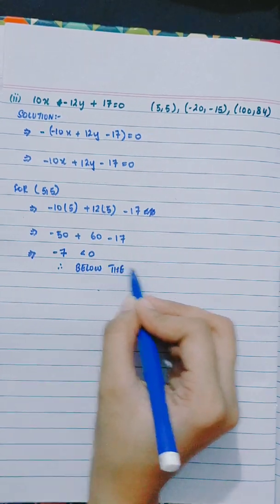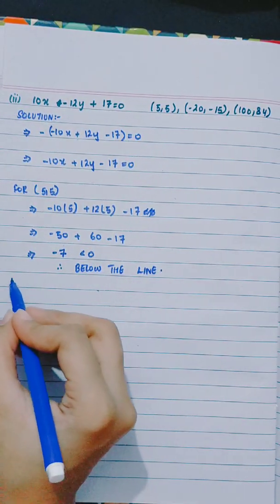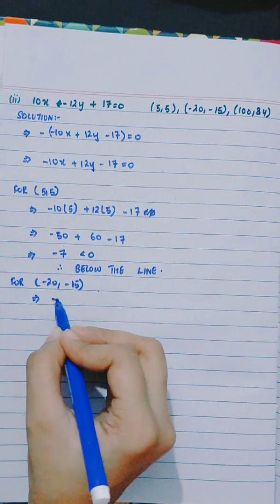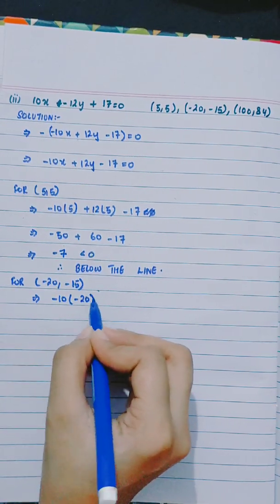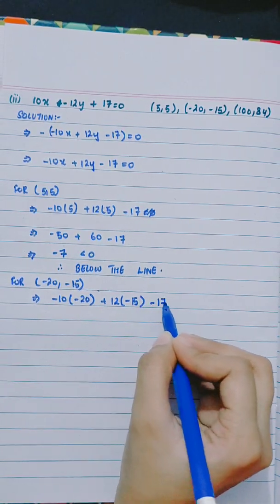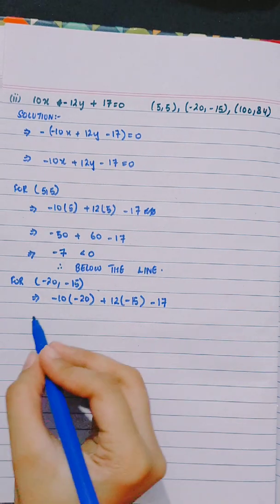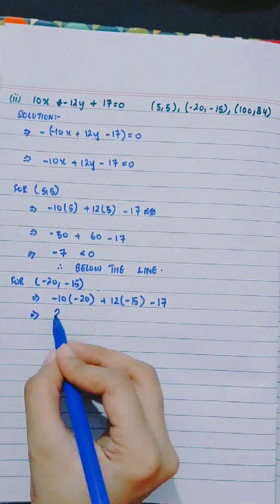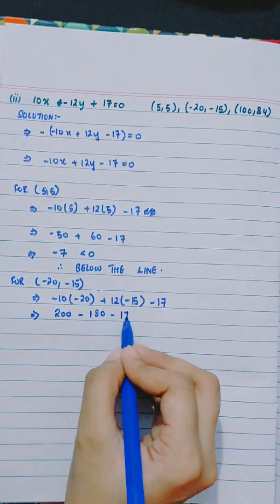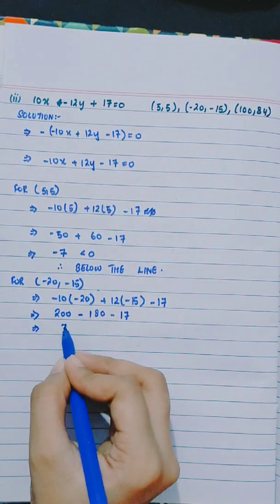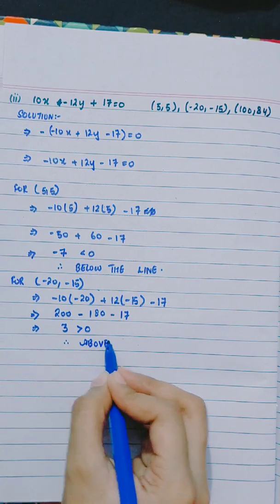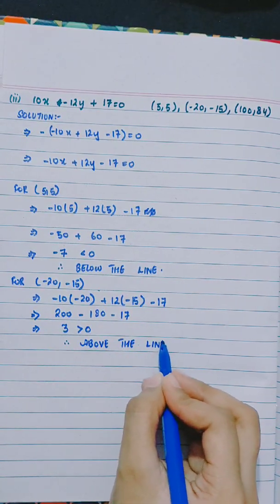For (-20,-15), -10 into -20 plus 12 into -15 minus 17. 200 minus 180 minus 17. 3 greater than 0, therefore above the line.